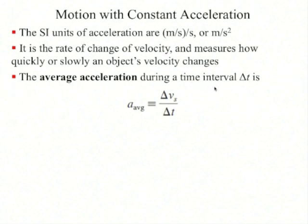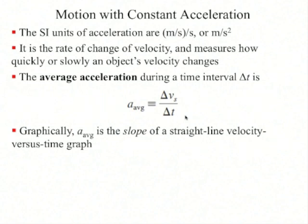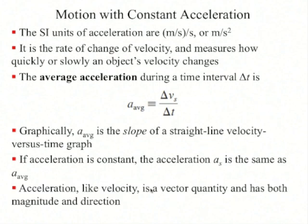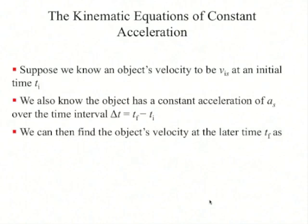The average acceleration during a time interval delta t is delta v divided by delta t. Graphically, this is the slope of a straight-line velocity versus time graph. Acceleration, like velocity, is a vector quantity with both magnitude and direction. There are three kinematics equations of constant acceleration to derive. The first: if we know an object's velocity to be v_i at time t_i, the velocity at a later time t_f is v_f equals v_i plus a times delta t.